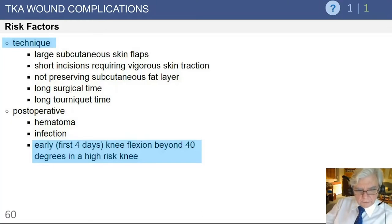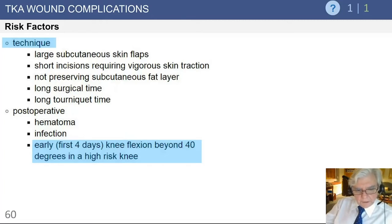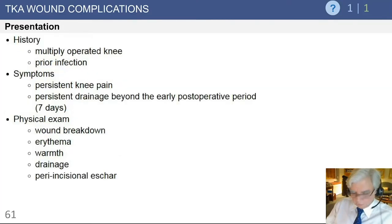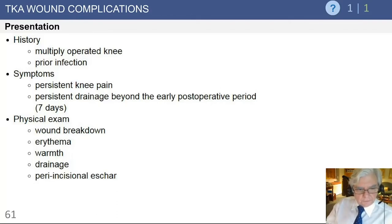Wound healing is further aggravated by hematoma or infection. Early knee flexion beyond 40 degrees in the high-risk knee is a concern — pushing a knee that is very stiff with problems of the soft tissues and skin to excessive flexion will potentially dehisce and destroy wound healing. The patients at greatest risk are multi-operated knee patients and those with prior infection. Persistent drainage from a wound is a serious problem and must be dealt with expeditiously.